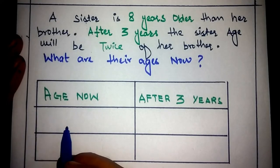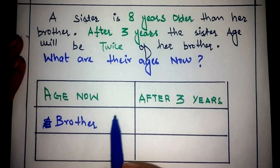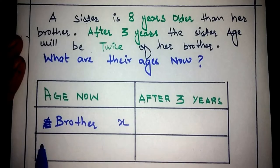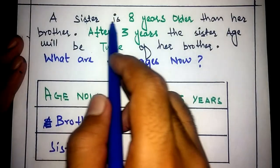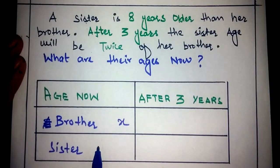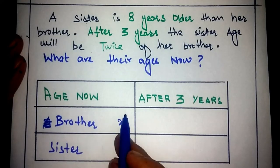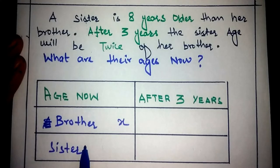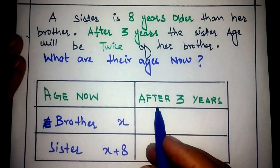Let's start with the age of the brother. The present age of the brother is X. The age of the sister — since she is 8 years older than her brother — will be X plus 8.